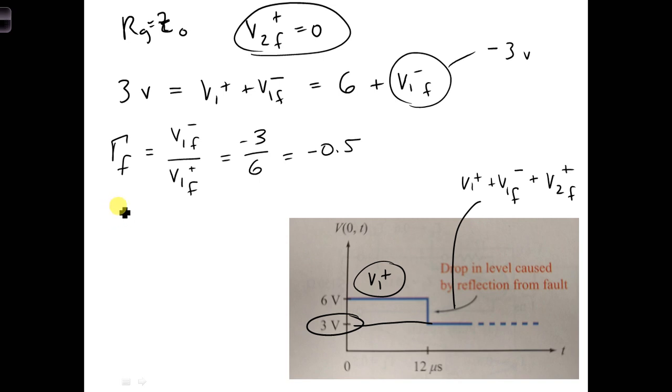Now, we can also write this as minus 0.5 is also equal to RLF minus Z naught over RLF plus Z naught, where RLF is the total load impedance at the location of the fault. Meaning, it's not RF, because RF is just the value of the resistor going between the two conductors. This is the total load impedance at the fault.